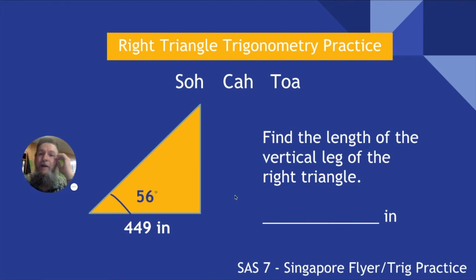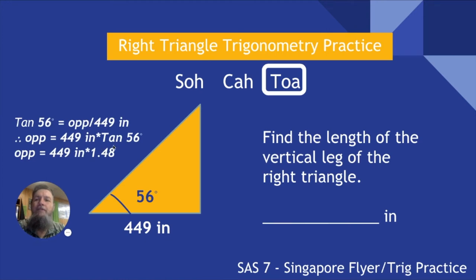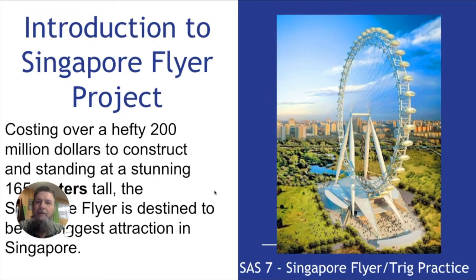Find the vertical leg of this right triangle with a 449-inch adjacent side next to a 56-degree angle. The vertical leg is the opposite side. Opposite over adjacent is the tangent of theta; theta is 56. So the opposite is 449 inches times tangent of 56, which is 1.48. The length of that opposite side is 664.52 inches.